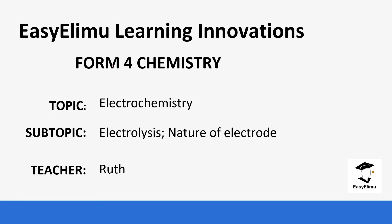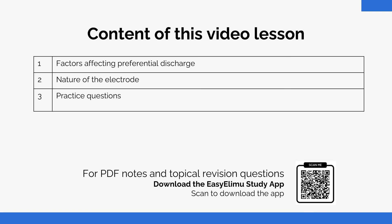Welcome to EZLM Learning Simplified. My name is Ruth and today we are going to be looking at the topic electrochemistry. Specifically, we are going to be looking at preferential discharge in the case where the type of electrode has been changed. Previously we have looked at other factors that affect preferential discharge, but today we are going to see if we get different products when we change the type of electrode.